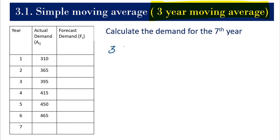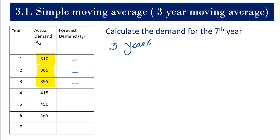For doing the forecast for the first year we do not have any prior data, so we are leaving it empty. For the second year we have only one year of data, so we will not be able to do the calculation. For the third year, we have only two years of prior data, so again we cannot calculate. For the fourth year, we have three years of data, so starting from here we should be able to calculate.